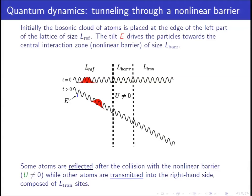Initially, the bosonic cloud of atoms is placed at the edge of the left part of the lattice. The tilt drives the particles towards the central interaction zone. Some atoms are reflected after the collision with the non-linear barrier, while other atoms are transmitted into the right-hand side.